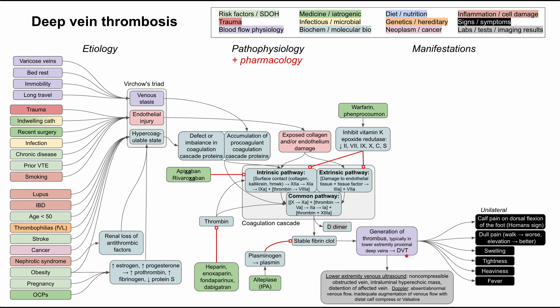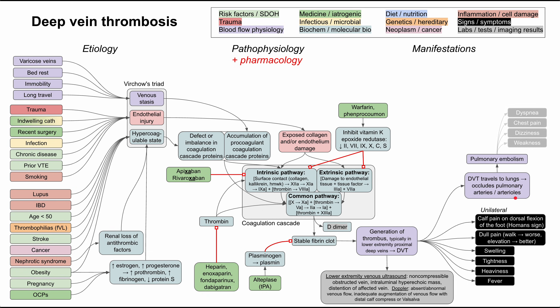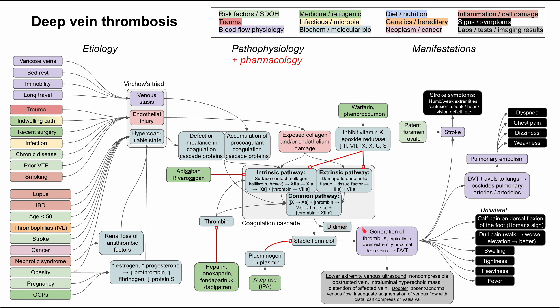A DVT can lead to serious downstream complications. The best known is pulmonary embolism, which occurs when the DVT travels to the lungs and occludes the pulmonary arteries or arterioles, causing shortness of breath, chest pain, dizziness, and weakness. Another complication occurs when a patient has a patent foramen ovale — a hole in the heart that should close during development. If it remains open, a DVT can travel from the right side of the heart to the left side and enter systemic circulation, potentially reaching the brain and causing a stroke with symptoms including numbness, weakness of the extremities, confusion, difficulty speaking, difficulty understanding, or visual deficits.